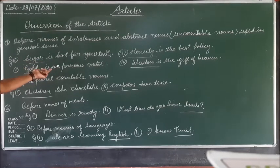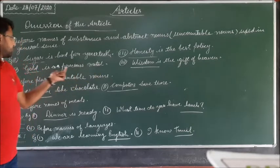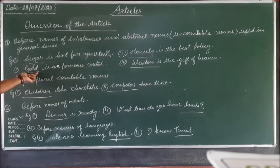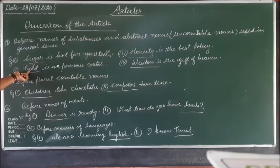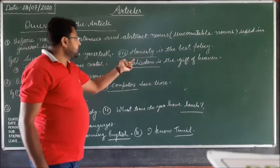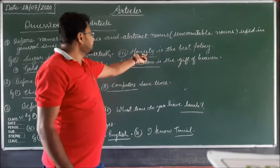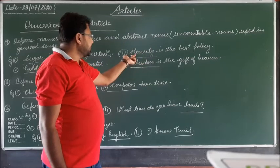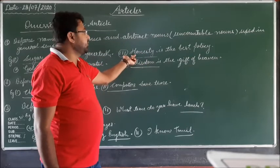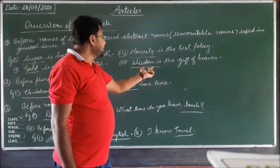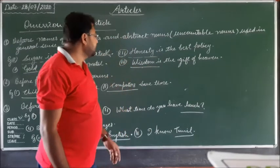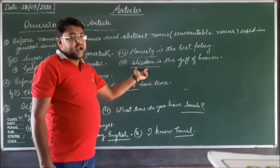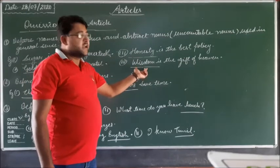Another example: 'Gold is a precious metal.' Gold is also uncountable and a substance, so before 'gold' we never use an article. Similarly: 'Honesty is the best policy' — honesty is an abstract noun, and before abstract nouns we don't use an article. Likewise, 'Wisdom is the gift of heaven' — wisdom is also an abstract noun, so no article is used.